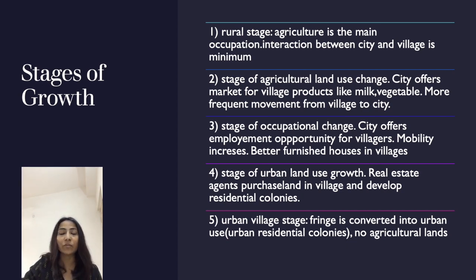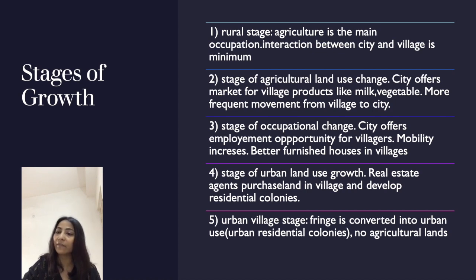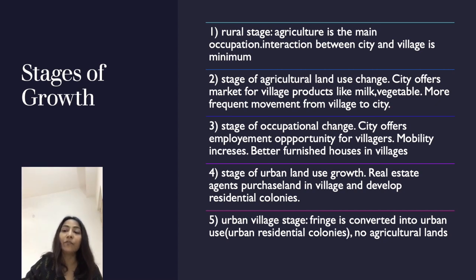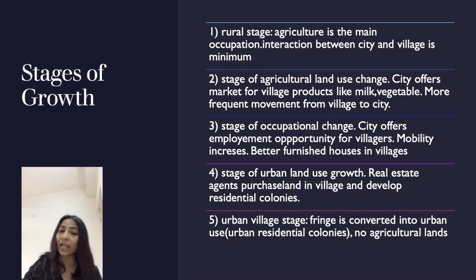Third is the stage of occupational change. The city offers employment opportunities for villagers, and therefore mobility between the city and rural areas increases, and because of that better-furnished houses can be built in the villages. Fourth is the stage of urban land use growth, where real estate agents start purchasing land in the villages and developing residential colonies in the rural areas.